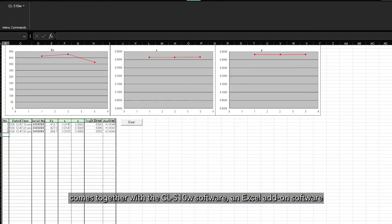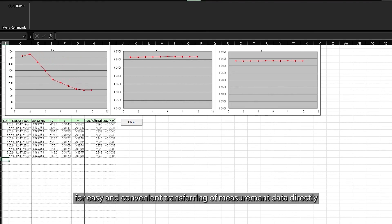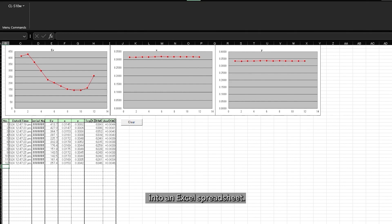The CL200A comes together with the CLS10W software, an Excel add-on software for easy and convenient transferring of measurement data directly into an Excel spreadsheet.